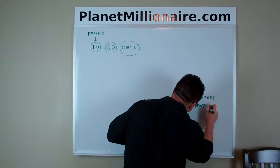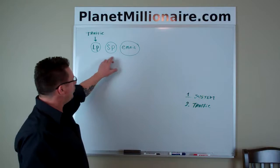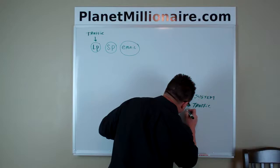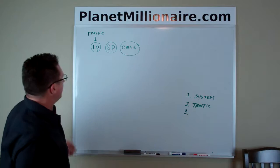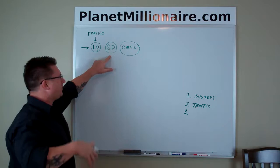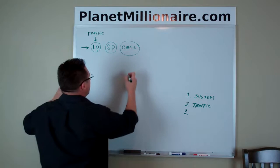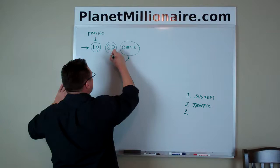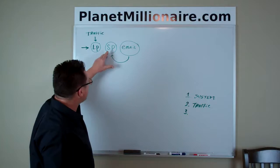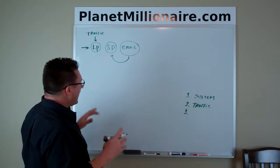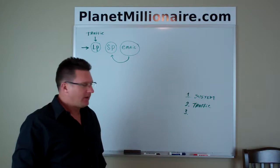Now, the next thing we've got to have — which is already built into our system — is email follow-up. Traffic goes through our funnel; they see our product, our service, our offer. These initial emails give the prospect a chance to see it again, because we put a link inside the email, send them right back to the sales page, and let them see it all over again. A lot of people stop right here — this is why they're not having success. They don't complete all the steps.